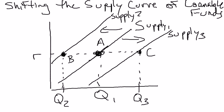So you've seen three examples and hopefully you've got the underlying intuition. Other than changes in the real interest rate, anything that leads to an increase in national savings shifts the supply of loanable funds to the right, and anything that decreases national savings shifts the supply curve of loanable funds to the left. That's it for the supply curve of loanable funds.